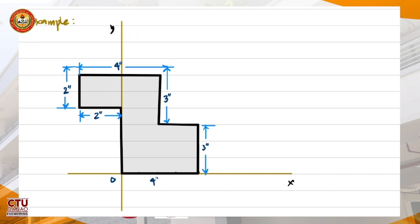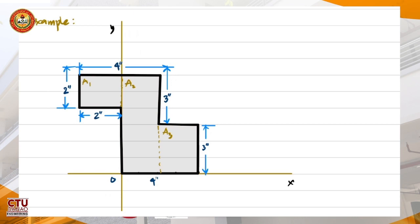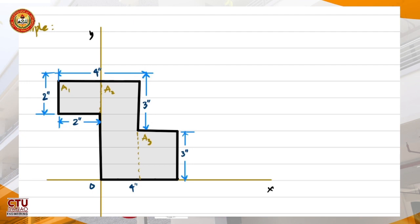Whichever way is more convenient to you is fine. I'll divide it this way: this will be area one, this will be area two, and this will be area three. The first thing we need to do is get the total area by adding up all the component areas. The total area equals area one plus area two plus area three.